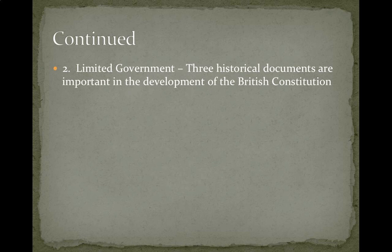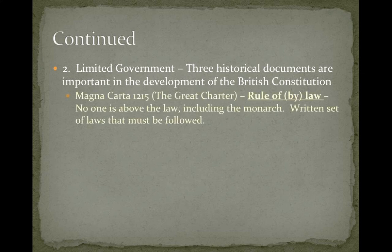The second basic tradition is an understanding of limited government. Three historical documents were very important to the development of the British Constitution. The British Constitution is different from ours — ours is a written document, while the British Constitution is a series of court rulings and common law, partly written and partly not. The Magna Carta, also known as the Great Charter, was signed in 1215. It established the idea of rule by law — that no one, including the monarch, is above the law, and everyone must follow a written set of laws.